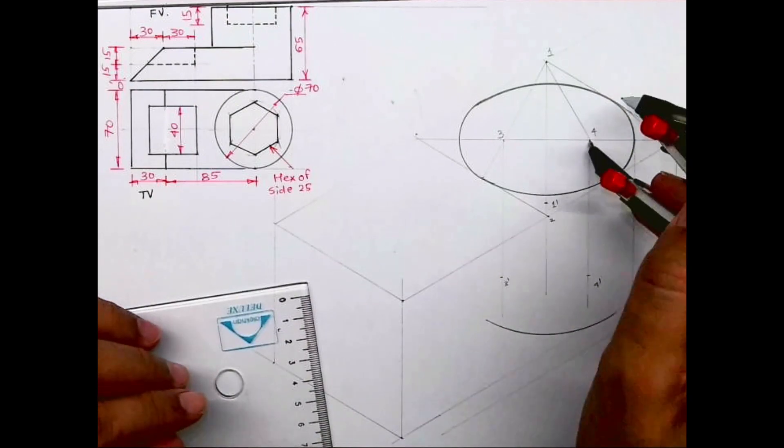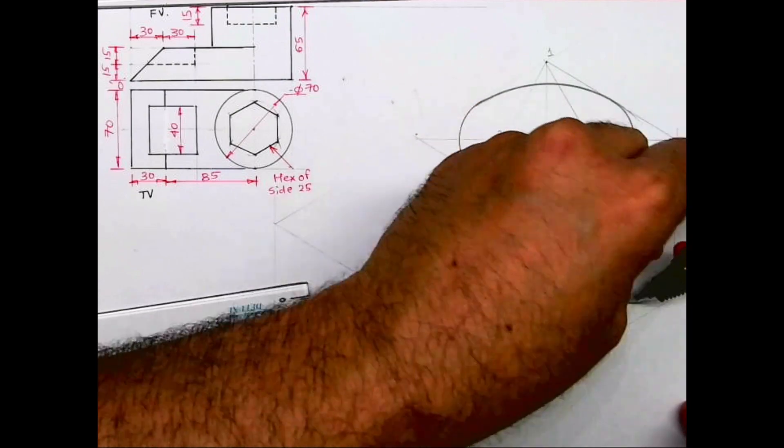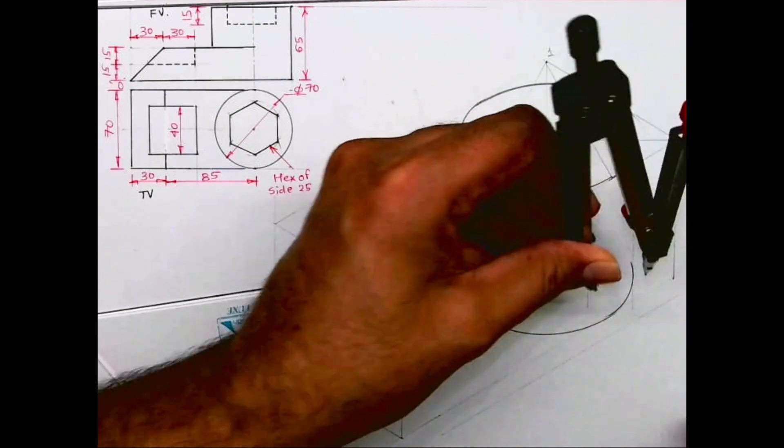Same way you can take 4 to this original radius and from 4 dash you can draw an arc, and it will merge with that tangent.